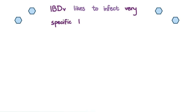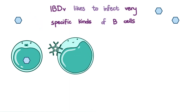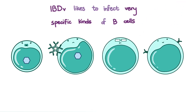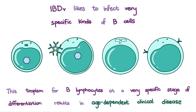The Infectious Bursal disease virus likes to infect very specific kinds of B cells. These are B lymphoblasts that do not bear any immunoglobulins yet, and B lymphocytes bearing immunoglobulin M. Interestingly, the virus does not replicate in stem cells and peripheral B cells. This tropism for B lymphocytes at a very specific stage of differentiation results in age-dependent clinical disease.